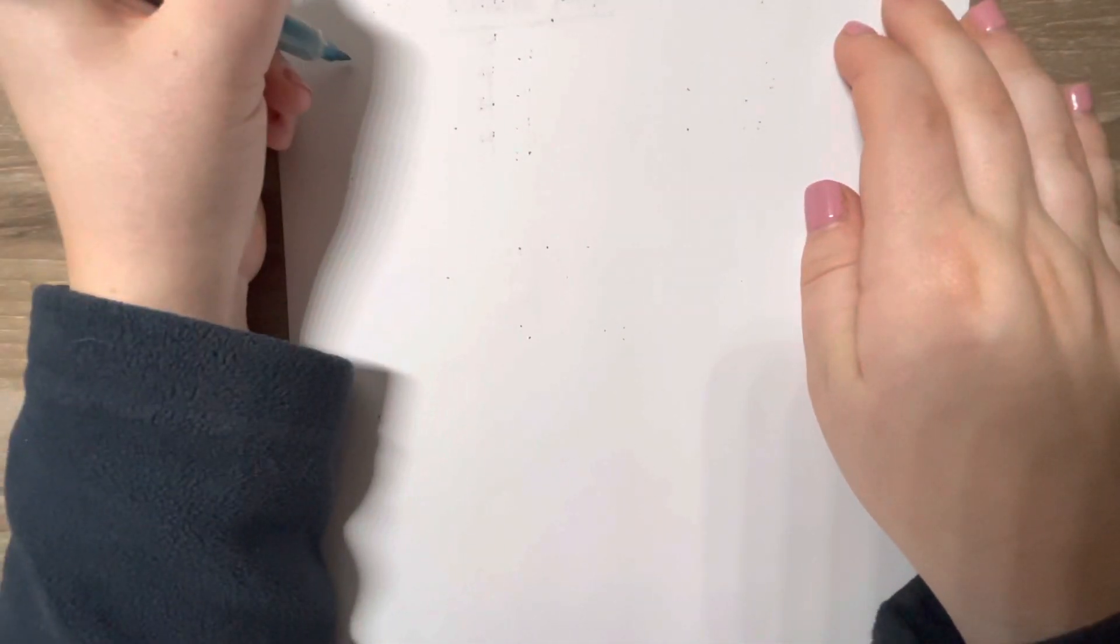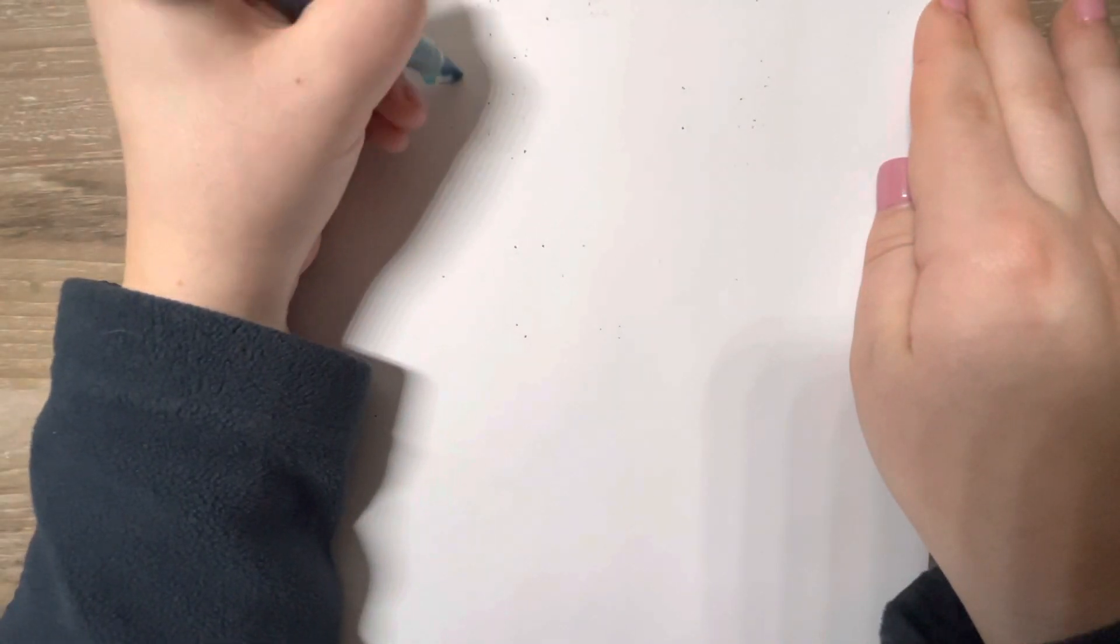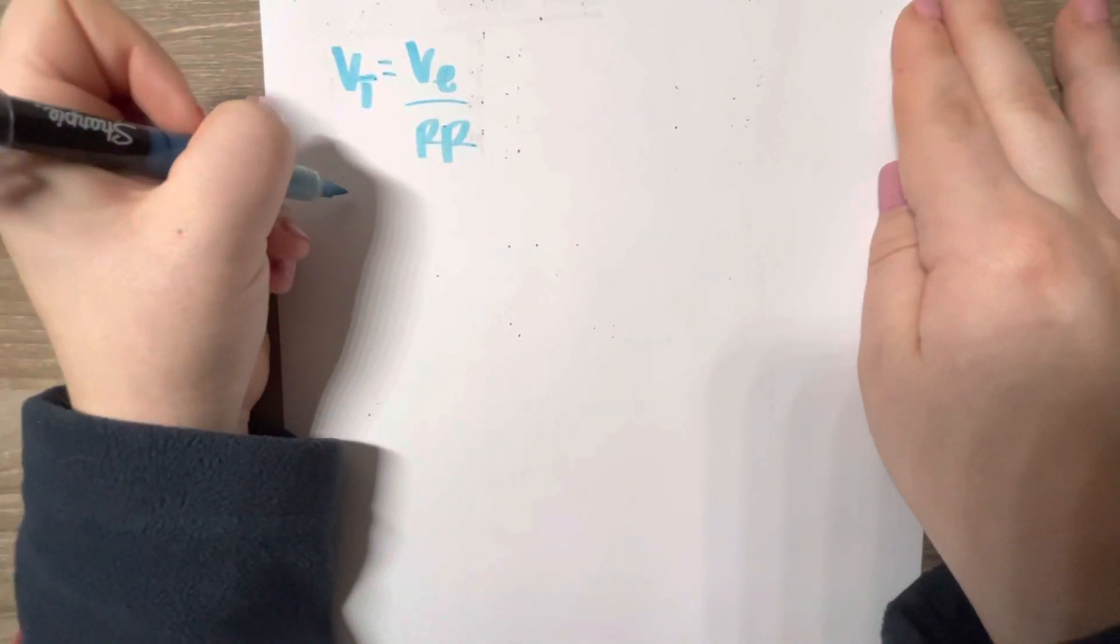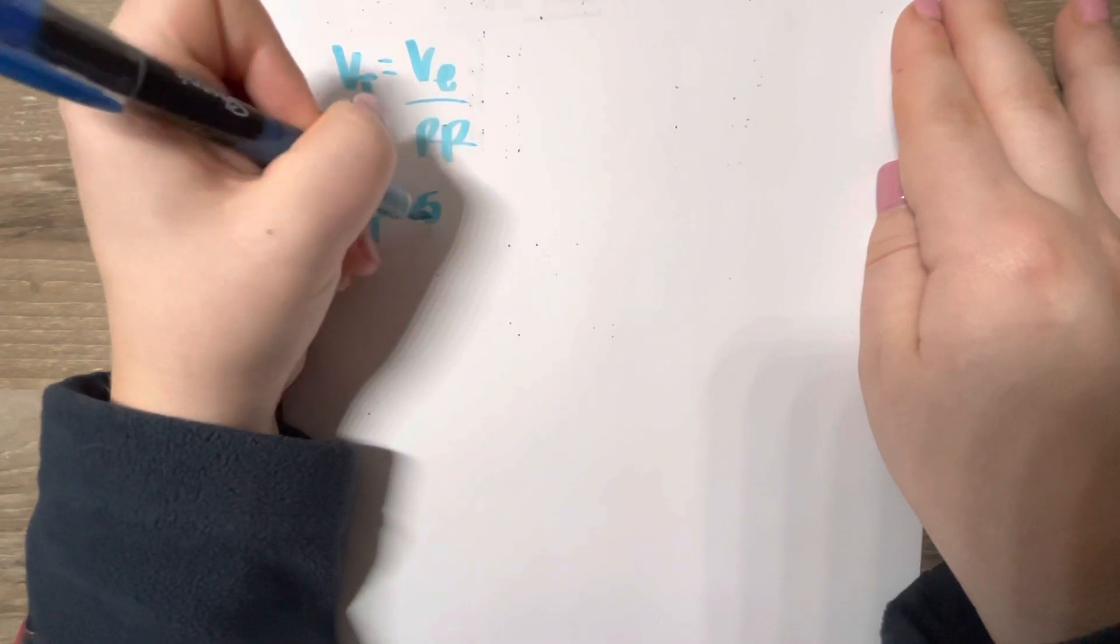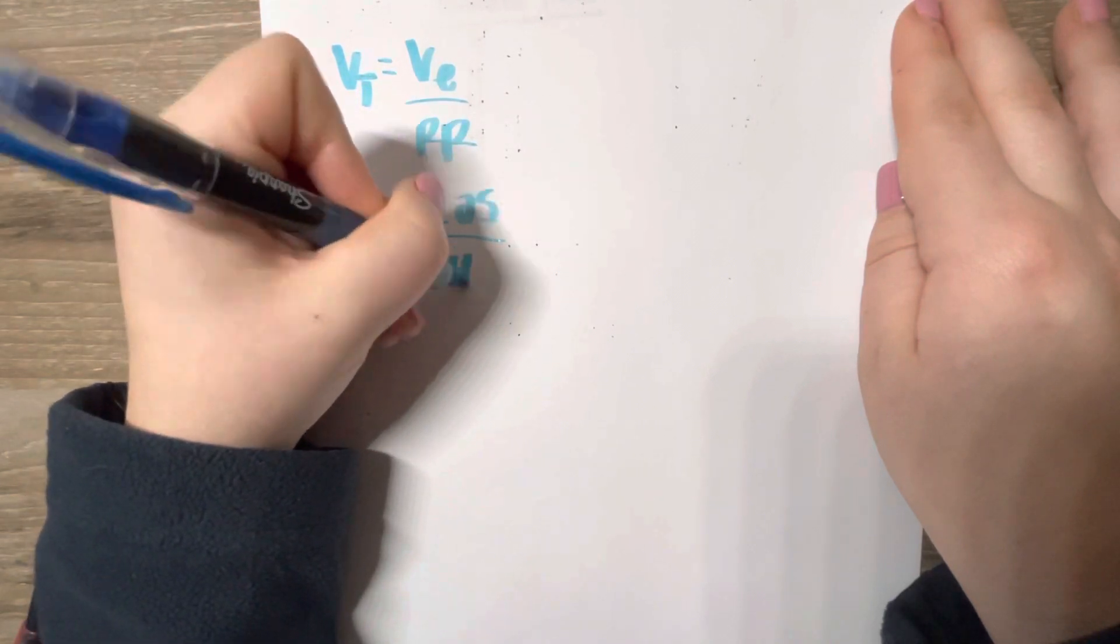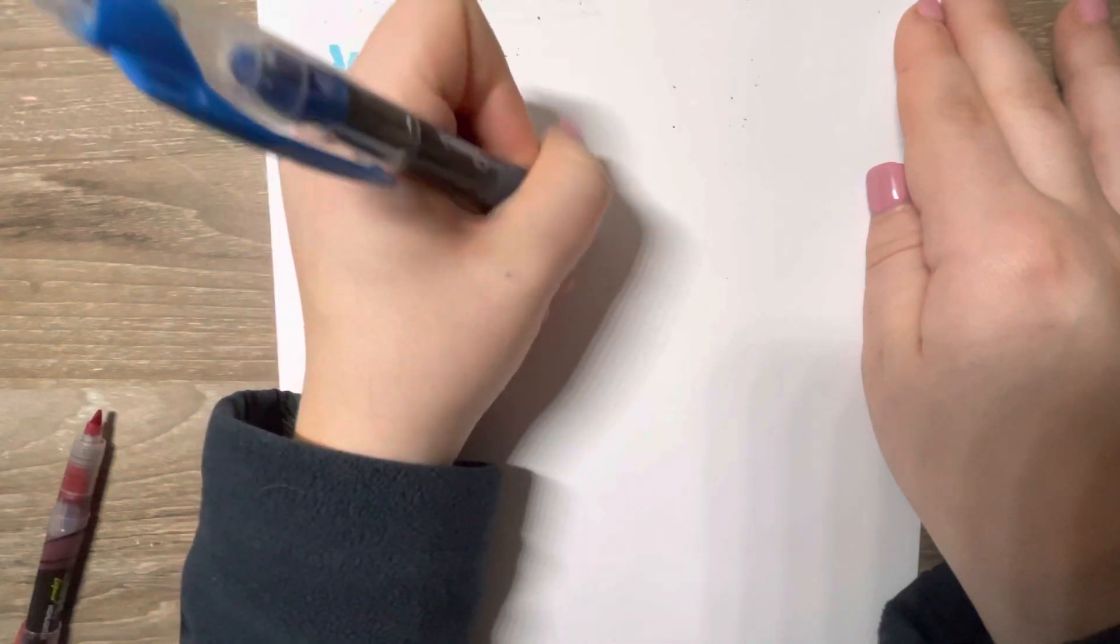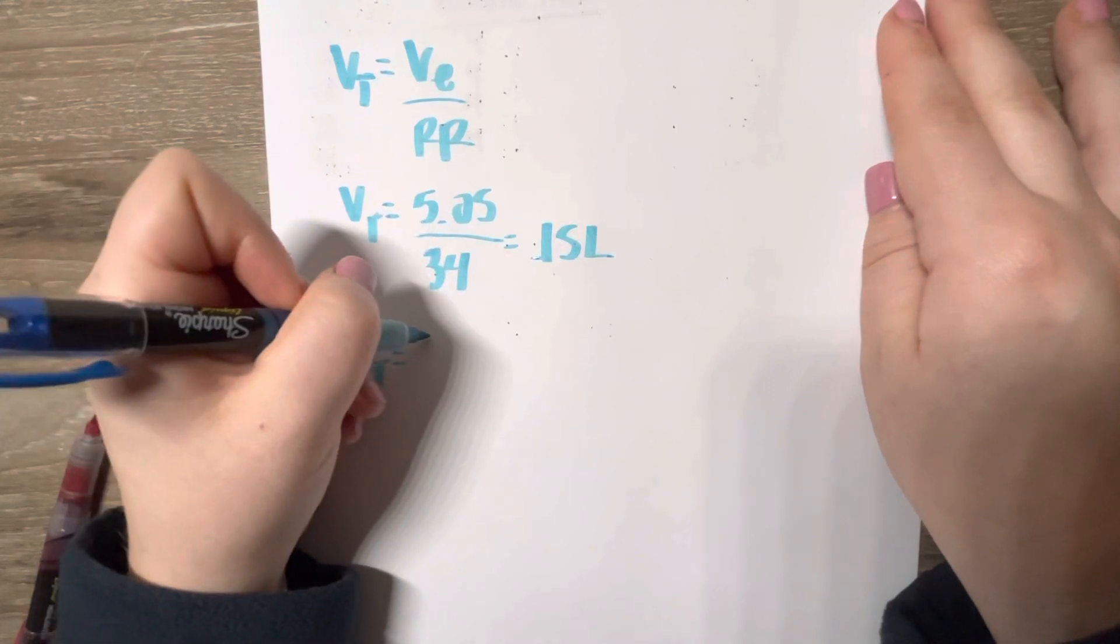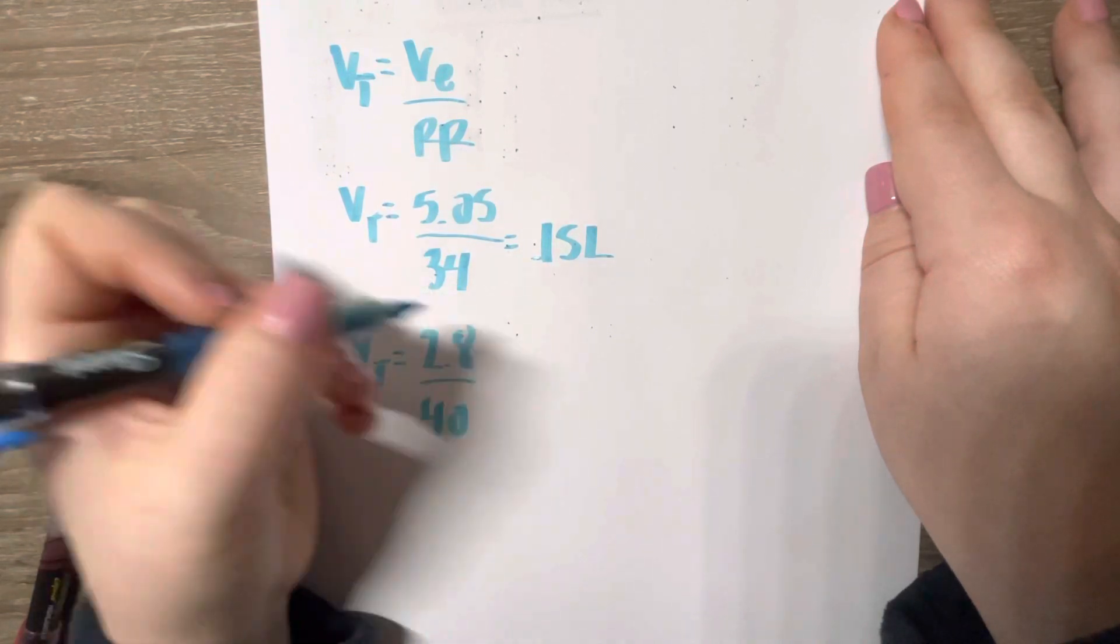And then we can repeat it. Tidal volume equals minute volume over respiratory rate. The next set of values we have is 5.05 over 34. And the last set of values we have is 2.8 over 40.